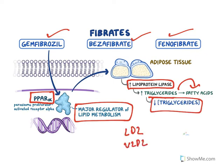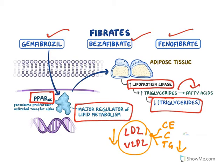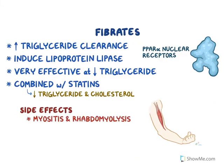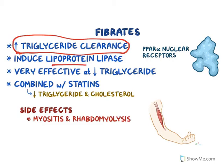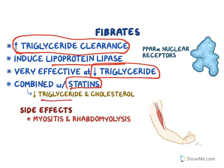LDL and VLDL are formed using cholesterol esters, cholesterol, and triglycerides — all of them together make these particles. When you reduce triglycerides, you will also be reducing LDL and VLDL. This is how fibrates act. They are very good at reducing triglyceride levels and are usually given along with statins so that both triglyceride and cholesterol levels are reduced. The major side effects are myositis and rhabdomyolysis, similar to statins.